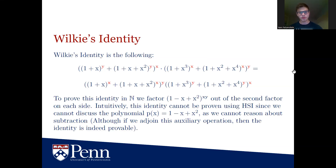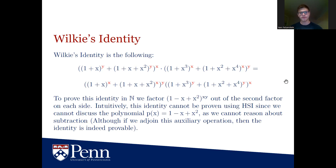To prove Wilkie's identity in the positive integers, we can factor the polynomial 1 minus x plus x squared to the power of xy out of the second factor on each side. Intuitively, the reason this identity cannot be proven using the high school axioms is that we can't talk about negation or subtraction — everything is defined with addition, multiplication, and exponentiation — so we can't discuss the polynomial 1 minus x plus x squared, which is crucial. Although if we add it as an auxiliary unary operation, we can prove this identity, but otherwise we cannot.